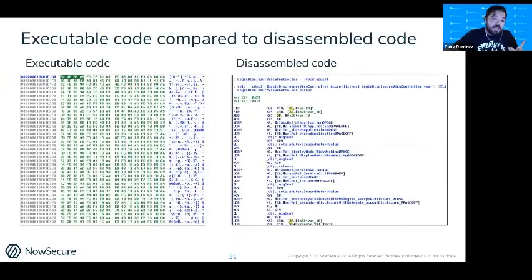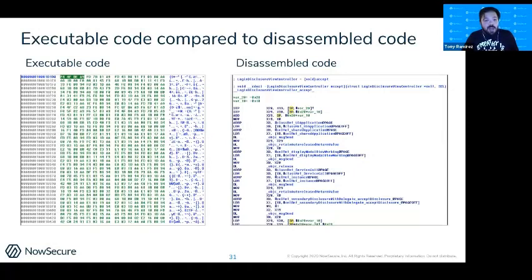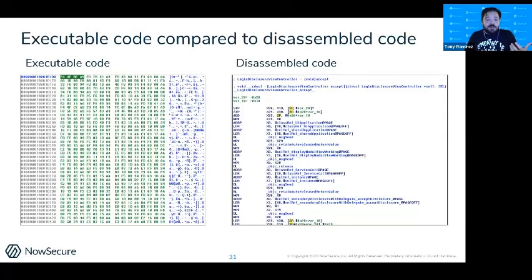On the native code side — C, Objective-C, Swift, or C++ — we start talking about disassembly. That executable code looks scary, and when we disassemble it we end up in assembly, which might also be scary. When doing reverse engineering, I often find myself needing to take a step back and a deep breath — but that is part of the black box reverse engineering process for native code.